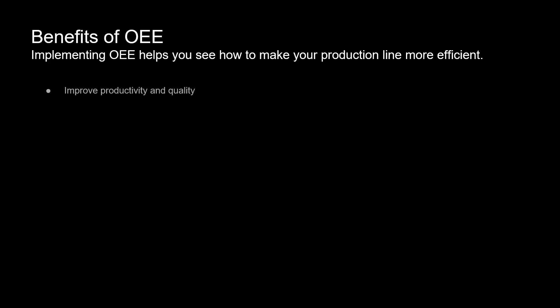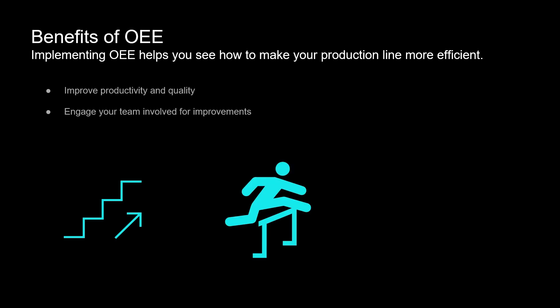Improved productivity and quality: by keeping a close eye on OEE, you're able to identify and address inefficiencies in your production process, leading to smoother operations, fewer errors, and ultimately higher productivity and better product quality. Engaged team involvement for improvements: implementing OEE isn't just about numbers and metrics — it's about fostering a culture of continuous improvement. When everyone is involved in monitoring and improving OEE, you create ownership and accountability that drives innovation and efficiency.